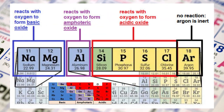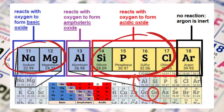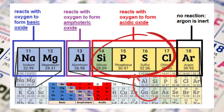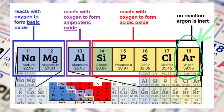Metals react with oxygen to form basic oxides; for example, sodium from group 1A and magnesium from group 2A form basic oxides. Non-metals react with oxygen to form acidic oxides; for example, silicon, phosphorus, sulfur, and chlorine from groups 4, 5, 6, and 7A form acidic oxides. Metalloids react with oxygen to form amphoteric oxides; for example, aluminum from group 3A forms amphoteric oxide. Group 8A elements are inert and do not form any type of oxides.